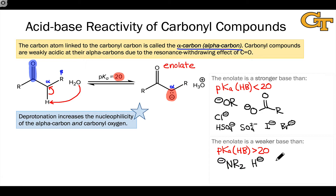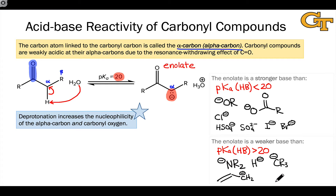Moving to the stronger category: any unstabilized carbanion, like an alkyl anion CR₃⁻ that lacks important resonance forms, is a stronger base than the enolate. Even some stabilized carbanions involving resonance with other carbons, like the allylic anion CH₂⁻ attached to a double bond, is still a stronger base than the enolate. All of these anions can in theory be used to deprotonate the alpha position of a carbonyl group favorably. The bases in the weaker category cannot generally be used to deprotonate the alpha position to generate an enolate.